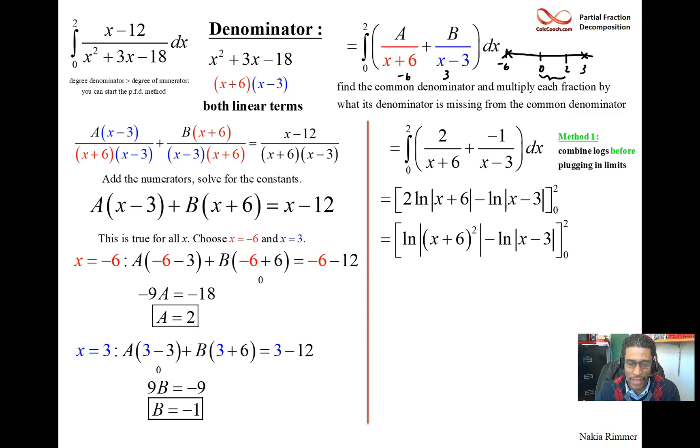So we put the 2 up using the log property, and then we combine them. Log of a minus log of b is the log of a over b.